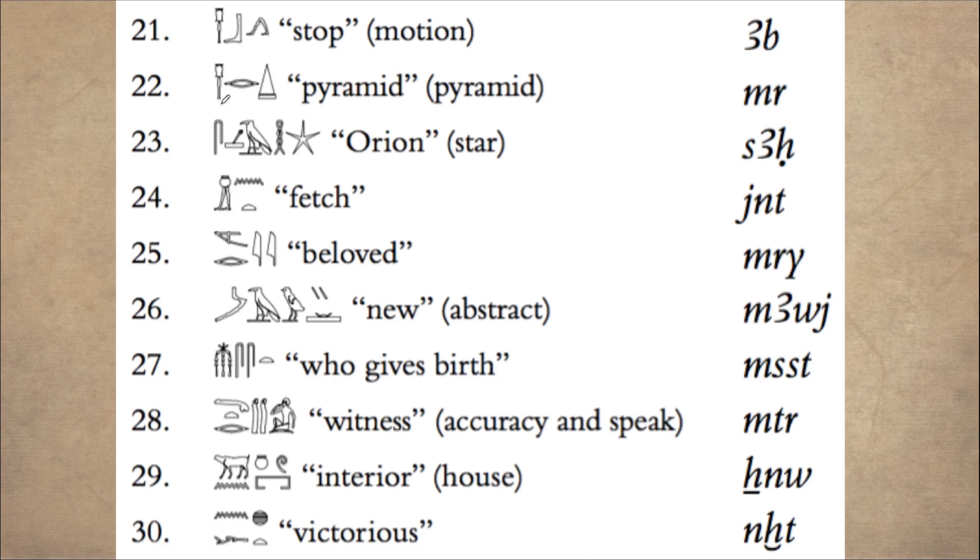Number 22 starts with the same hieroglyphic, but this time you read it mer. Then the sound r, ra, and a pyramid, which is a determinative in the shape of a pyramid.